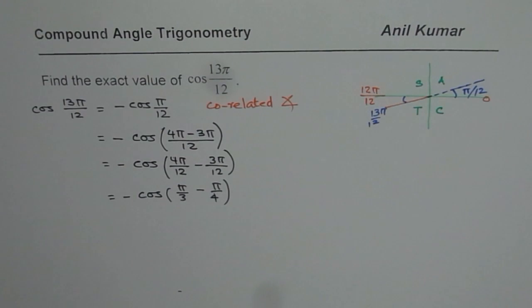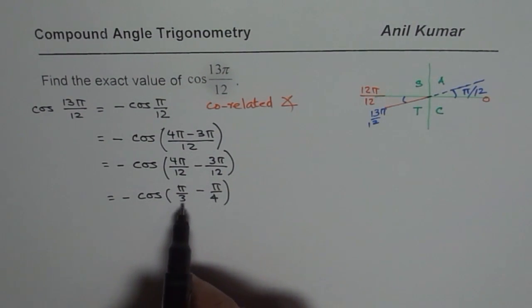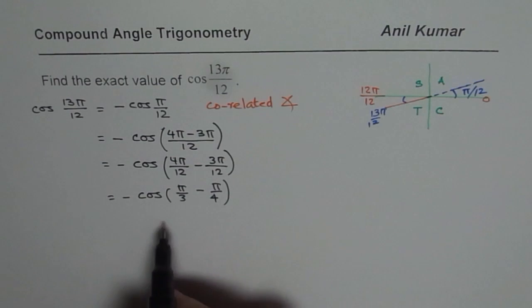Now, once you have the combination, then you can apply the compound angle formula for cos π/3 and then solve. So, that is the issue.